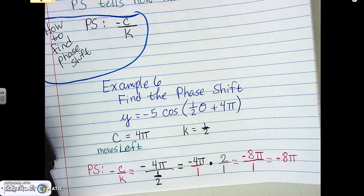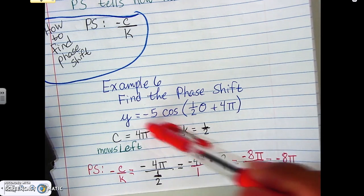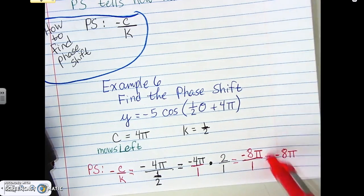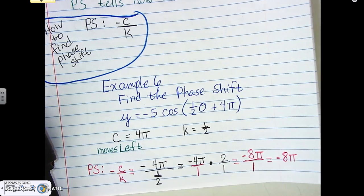And that's our phase shift. So, the C tells us what direction to move. The phase shift here tells us how far to move. And that's it. That's all we got to do.